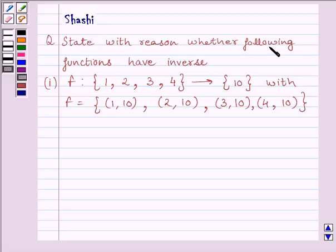State with reason whether the following function has an inverse. F is a function from set {1, 2, 3, 4} to set {10} with F equal to the set of ordered pairs (1, 10), (2, 10), (3, 10), (4, 10).